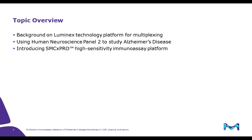During this webinar, I will be covering a few topics related to the immunoassay portfolio of Millipore Sigma. First, I will provide some background on multiplex protein detection technology. Then I will talk about assays we have developed for neuroscience research, specifically highlighting a new kit, Human Neuroscience Panel 2. I will share data measuring existing and emerging biomarkers of Alzheimer's disease in cerebrospinal fluid, plasma, and serum. Lastly, I will discuss SMC, which stands for single molecule counting — a high-sensitivity immunoassay allowing protein measurement at femtogram per milliliter concentrations. I'll introduce the new SMCX Pro instrument and share data on the measurement of amyloid beta 42.